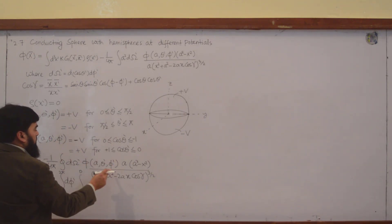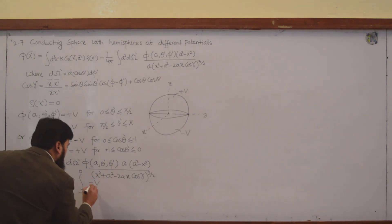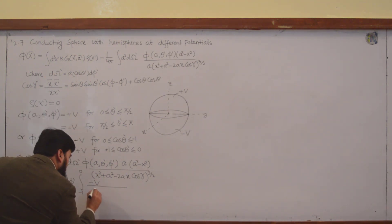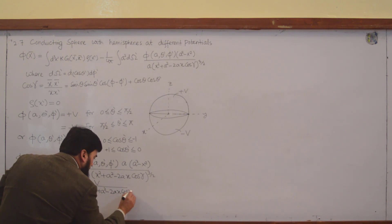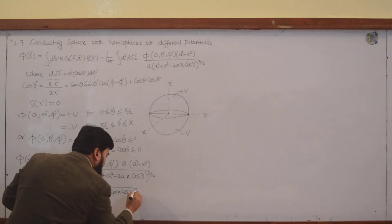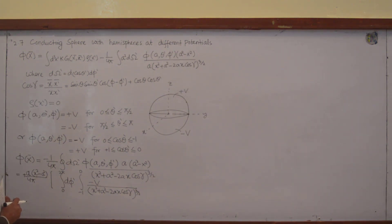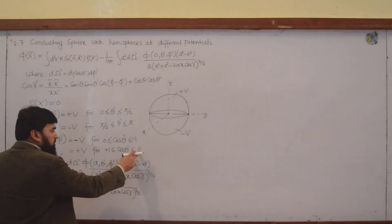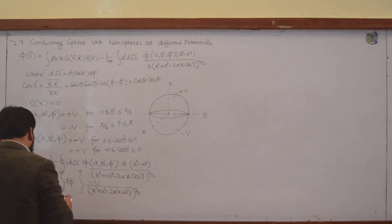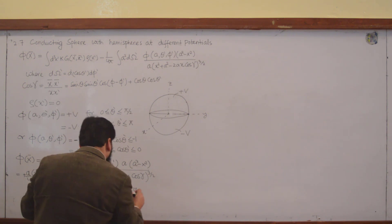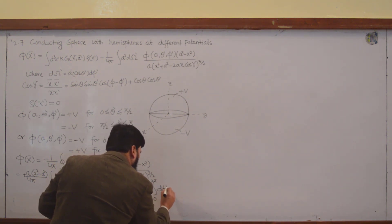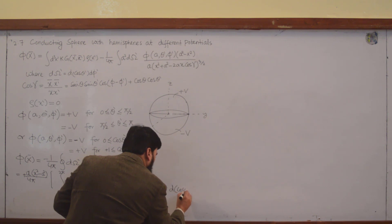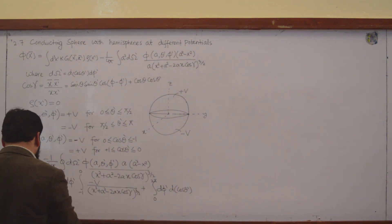Minus V is the value of this potential, divided by x² + a² − 2ax·cos(γ) to the power 3/2. We got the first limit from minus 1 to 0, but then we will have to go from 0 to 1 as well, because we will have to cover the whole hemisphere. So plus: 0 to 2π dφ' and d(cos θ').